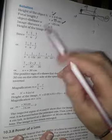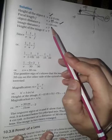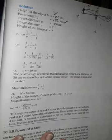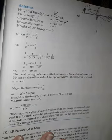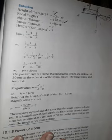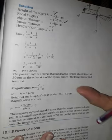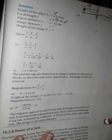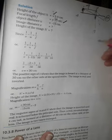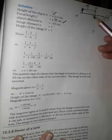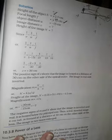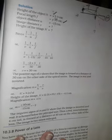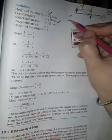Next, object distance is minus 15. How are we determining the plus or minus sign? We are using the sign conventions. Object is on the left hand side. If you measure from here, the object is this way, so it's minus. Then here, minus sign.